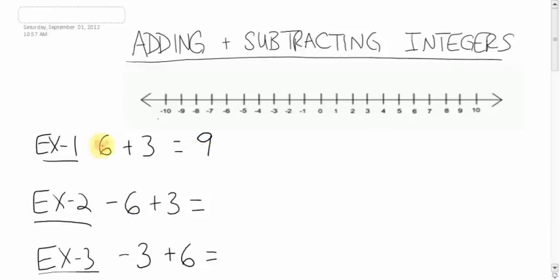Common sense tells you that you have 6, you add 3 more, you have 9. And that is your answer. Okay. A little bit harder. Negative 6 plus 3. How do we do this?